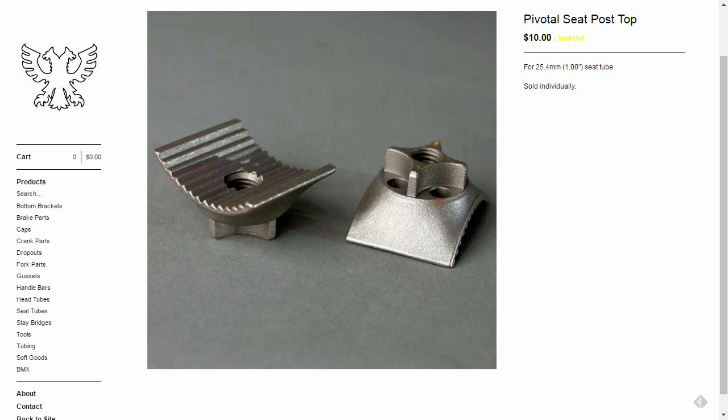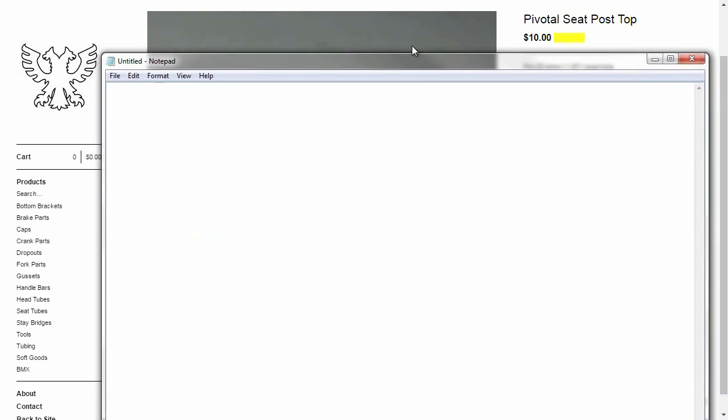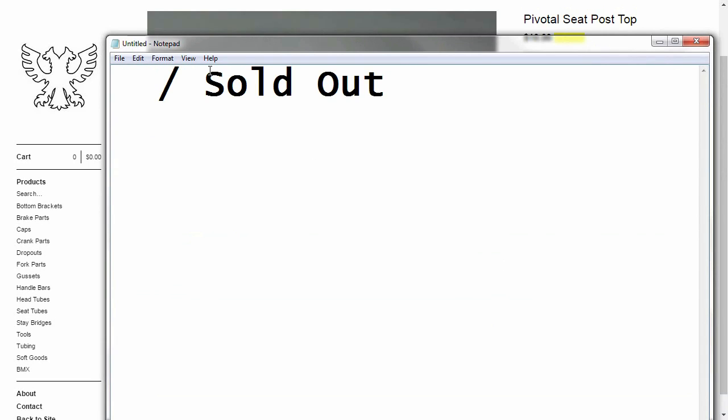My original plan was to buy one of these pivotal seat tube toppers from the Solid Bikes website store. I was going to weld this right on the frame but unfortunately they don't carry this item anymore.